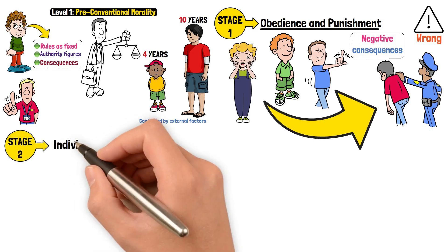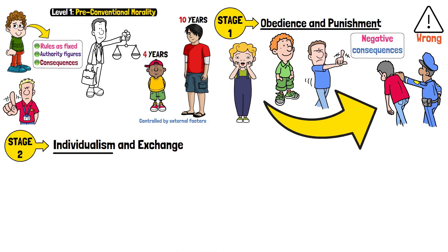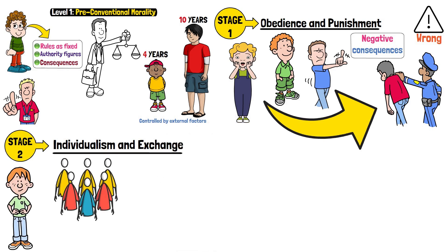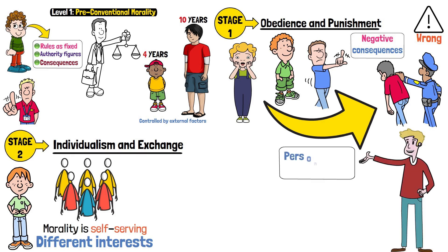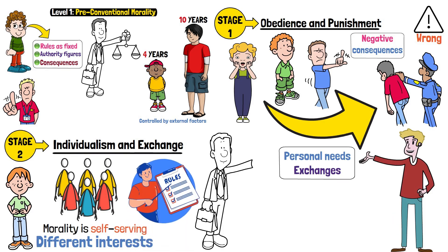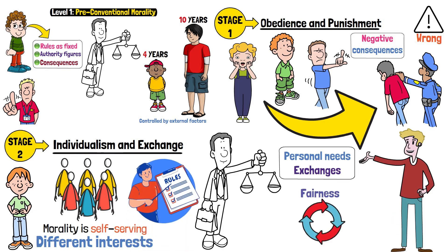Stage 2 – Individualism and Exchange. Children recognize that others may have different interests. Morality is self-serving, guided by personal needs and exchanges. They follow rules when it benefits them, with fairness seen as equal exchange.